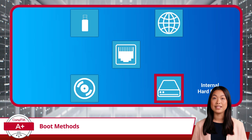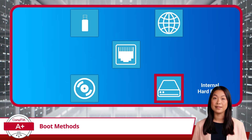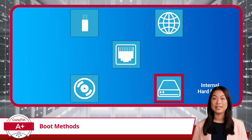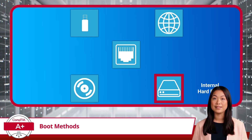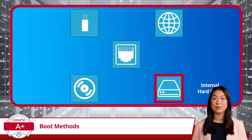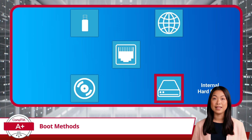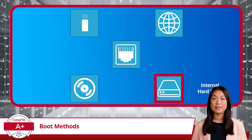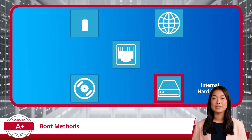Lastly, we have the ability to boot using an internal hard drive. This involves setting up a dedicated partition on the internal drive that holds the OS setup files — a neat way to keep everything self-contained within the device. When you need to install or upgrade the OS, you boot from this section of the hard drive, and the process begins. This boot method is particularly useful for devices that frequently need OS reinstalls or upgrades without external dependencies.